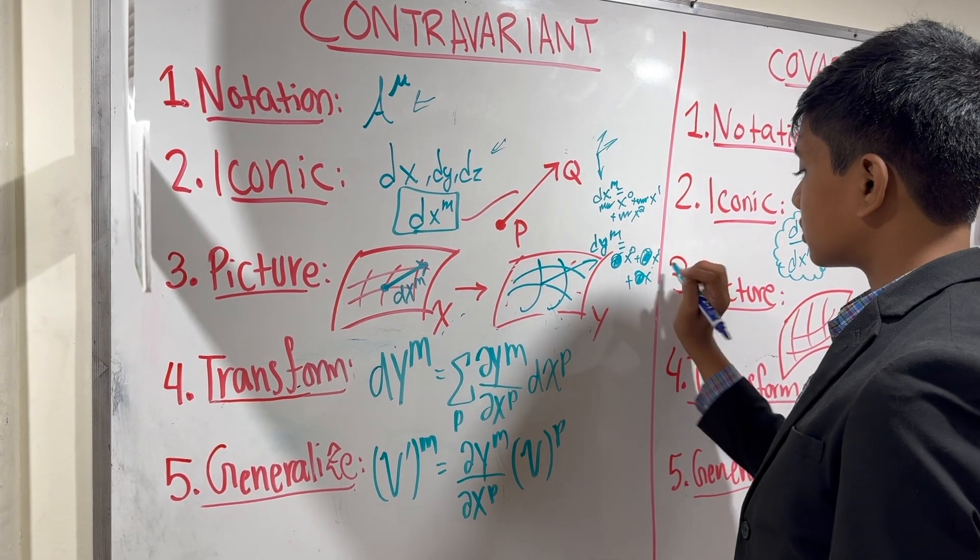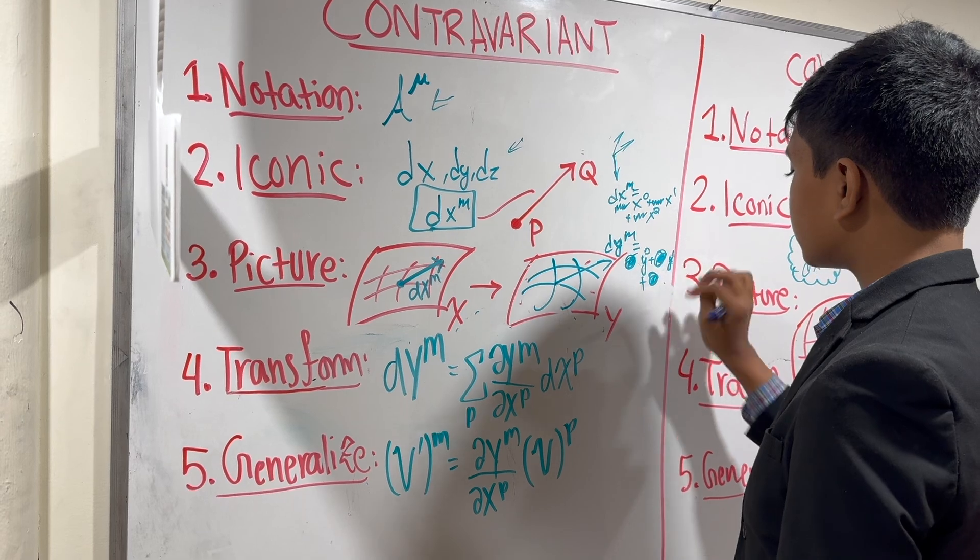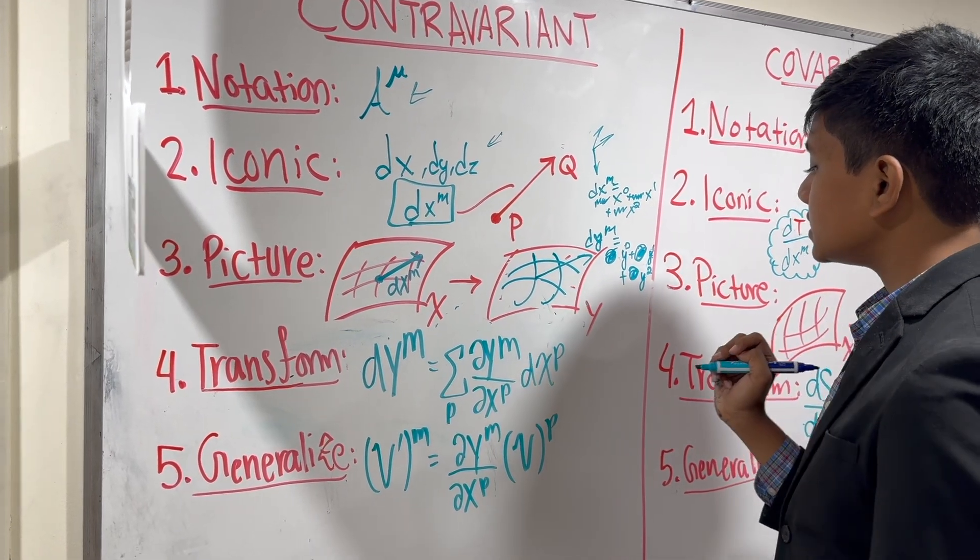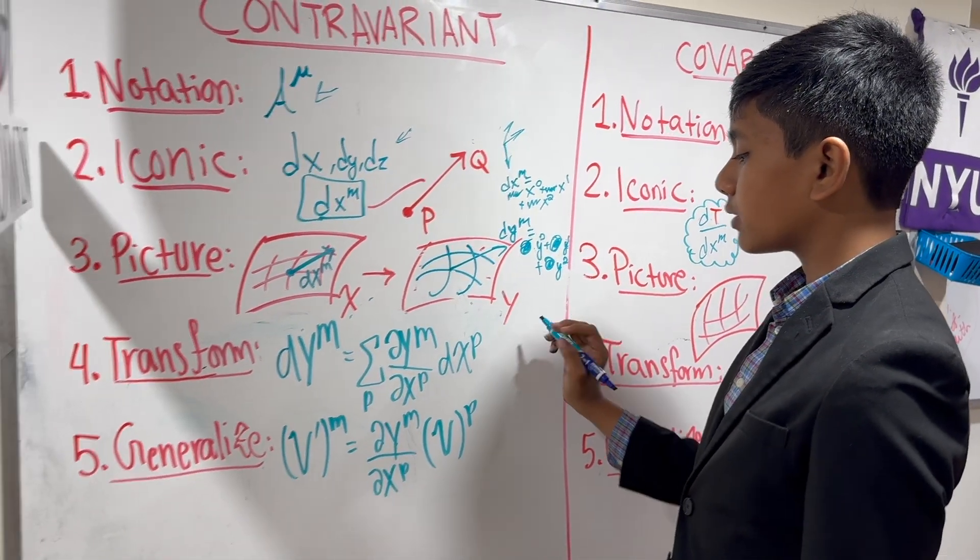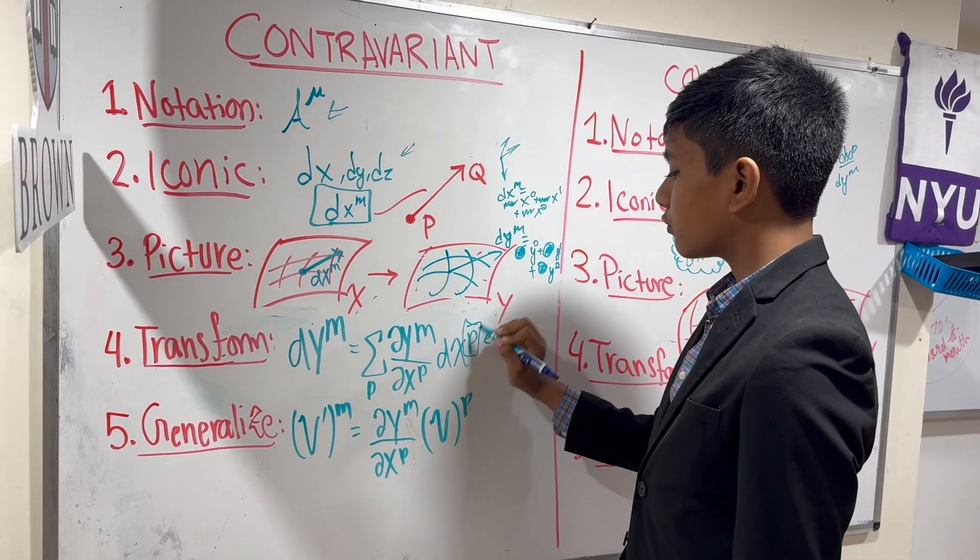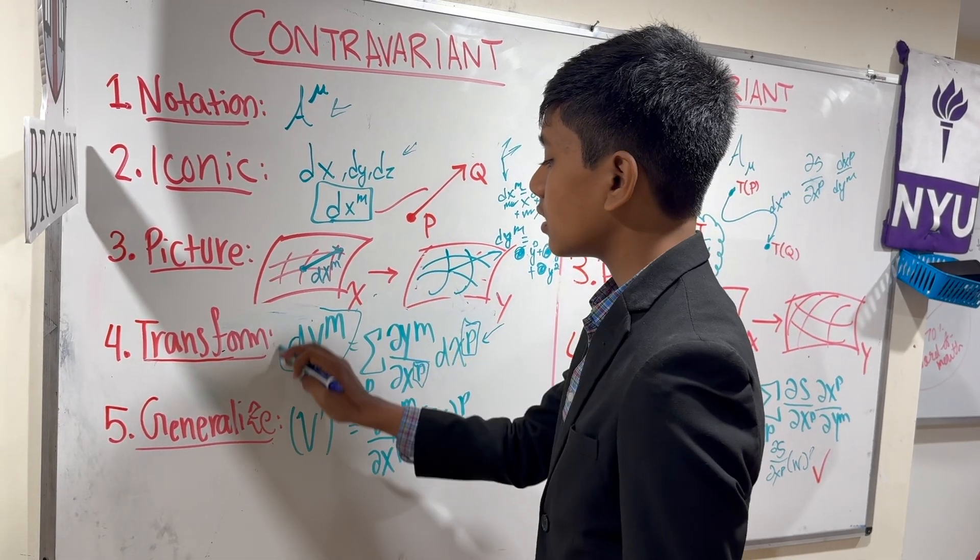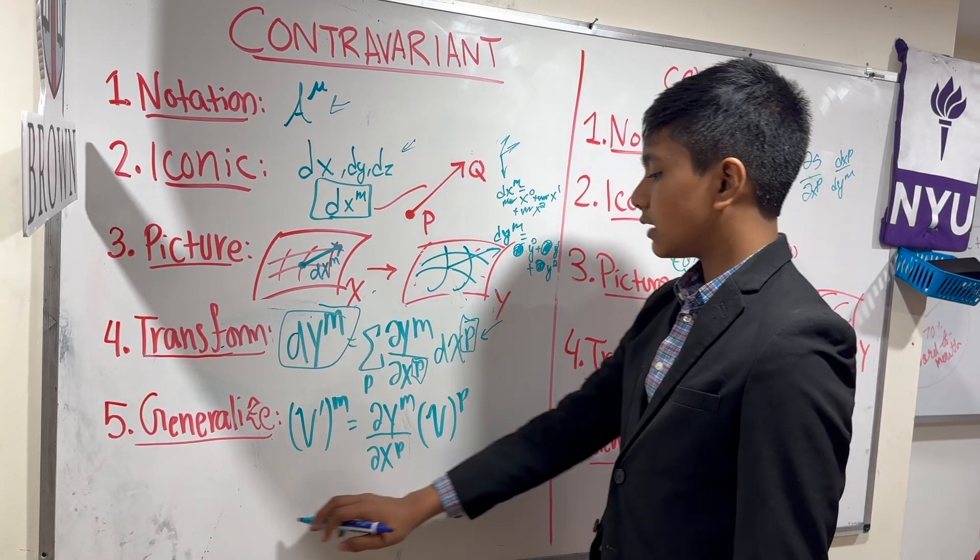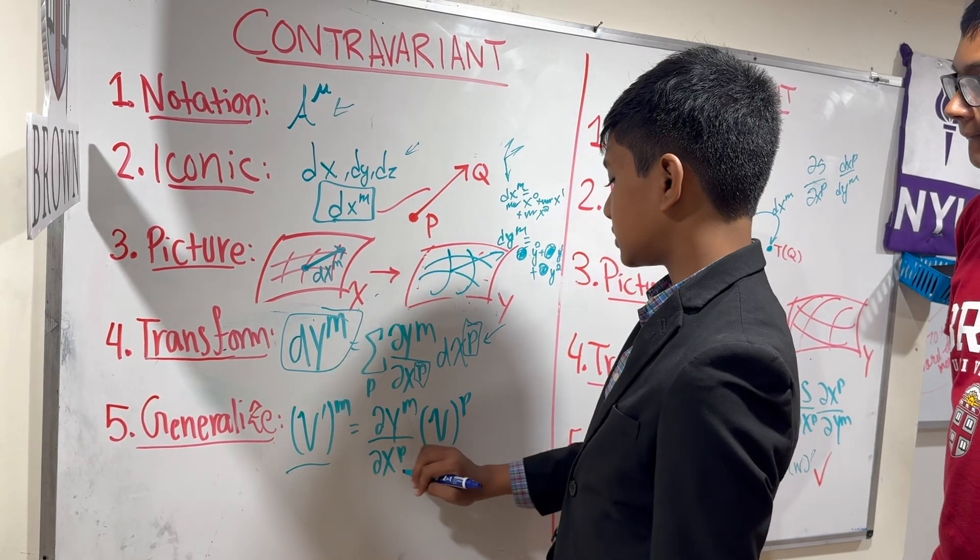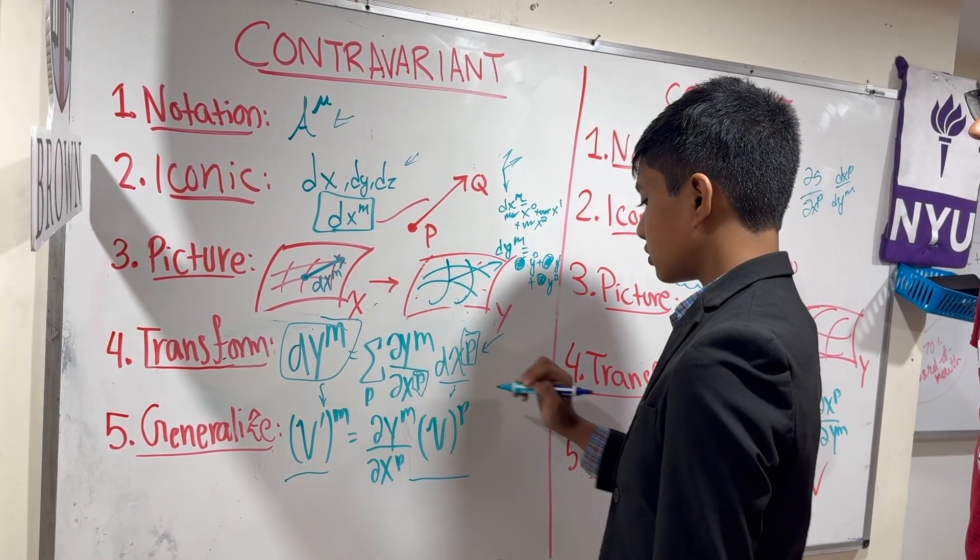This would be y0, y1, and y2. We essentially want to see how every basis vector reacts to this transformation. So we're summing over every basis vector of the x to get each basis vector of our new y coordinate. And finally, generalizing it, we just have this as our overall vector.